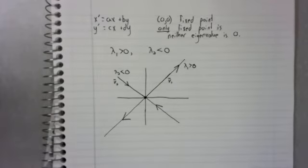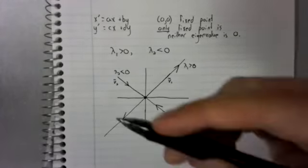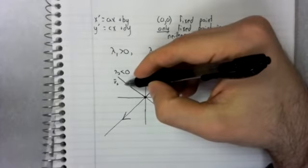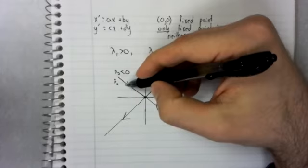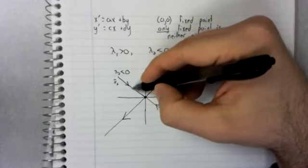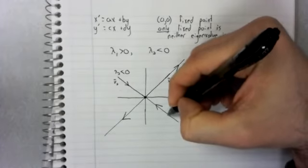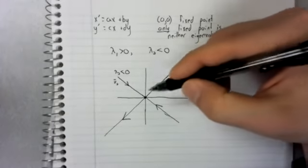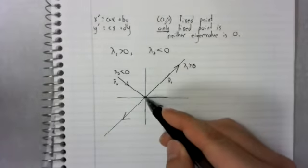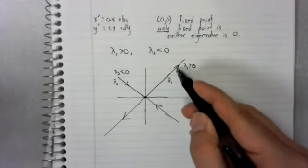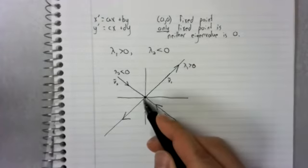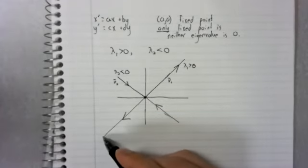So, if we happen to be on an eigenvector, we know what happens. You go in towards the origin on this eigenvector. You go away from the origin on this eigenvector, you go away from the origin on that eigenvector.